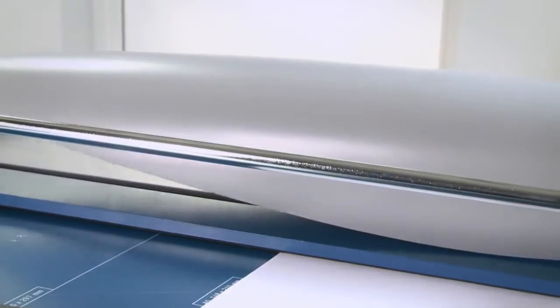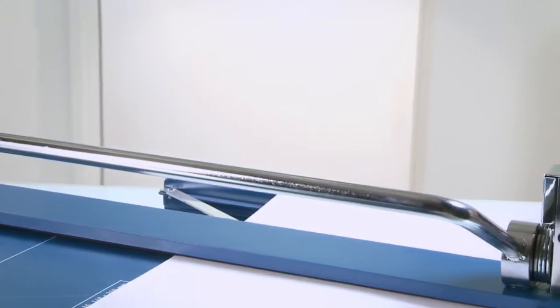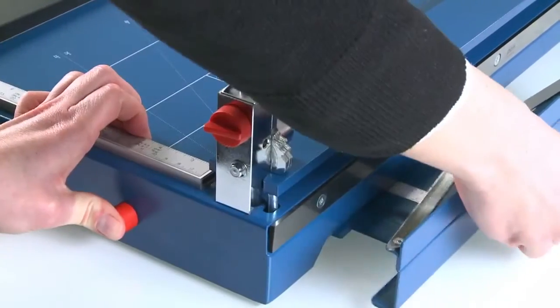The front stop can be used for cutting strips of equal width and pulls out to a distance of 210 millimeters.